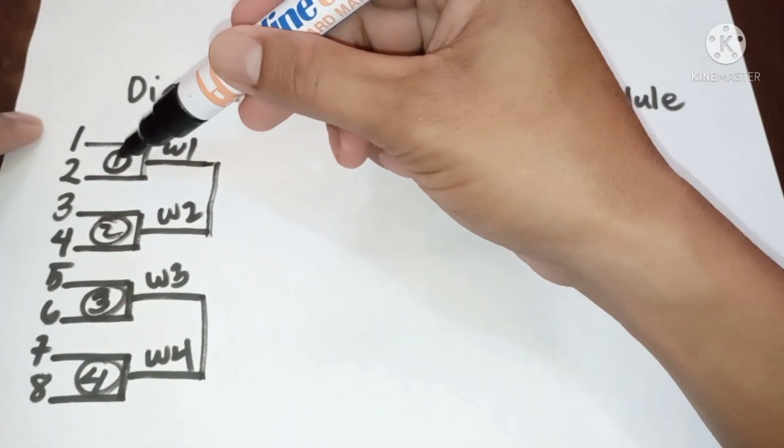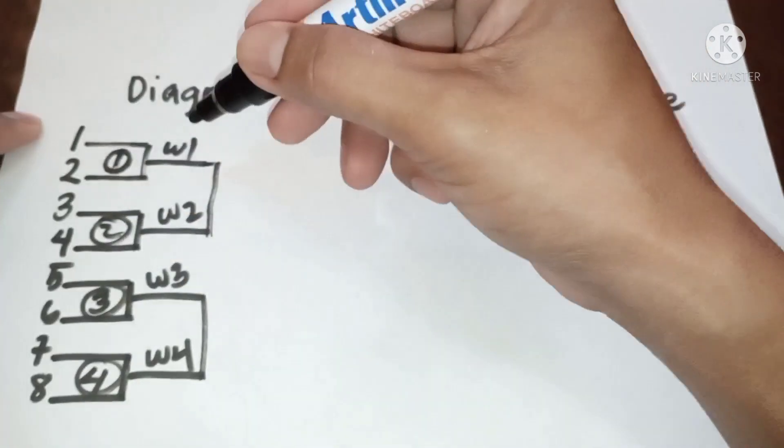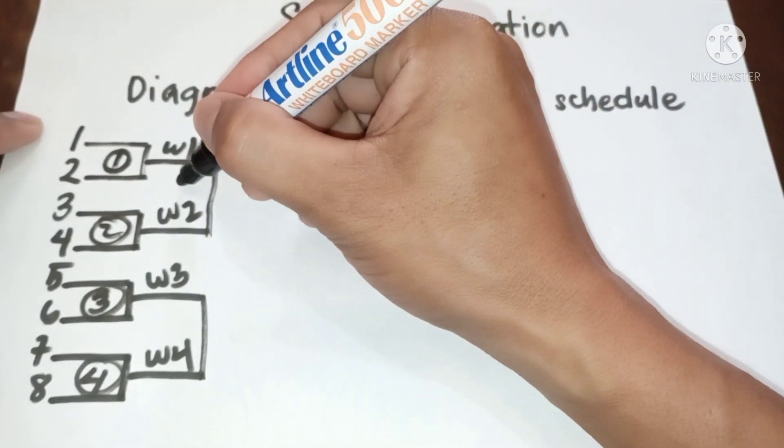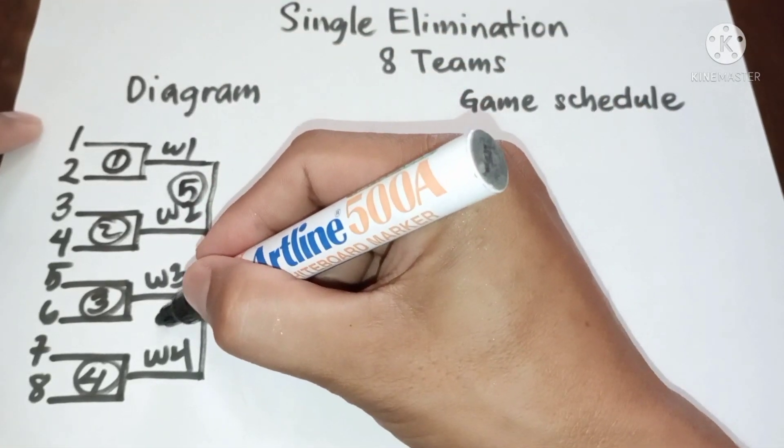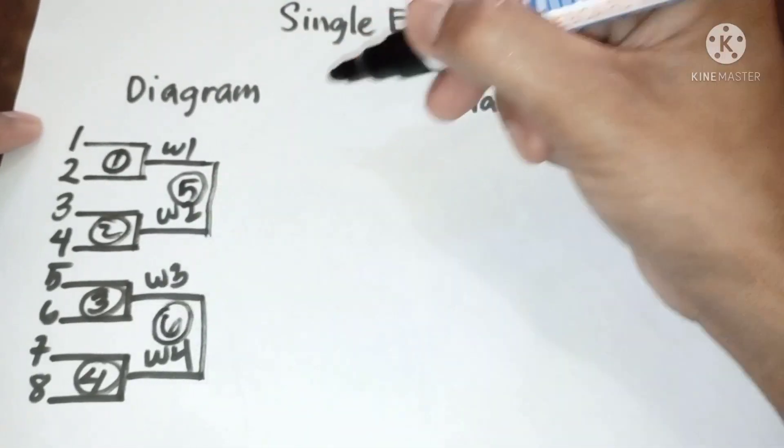So we have game one, two, three, four. Then this would be from the top, this will be the fifth game, then game six.